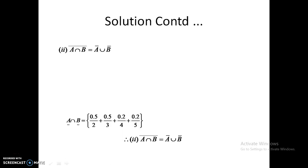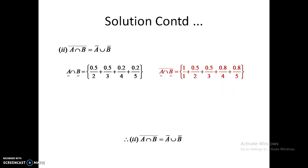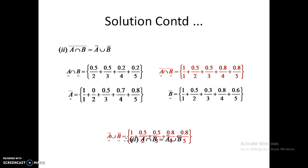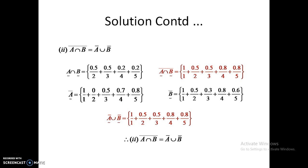For the second law: A intersection B whole bar equals A-bar union B-bar. We find A intersection B and take its complement to get one result. Then we compute A-bar union B-bar by taking the maximum of A-bar and B-bar. Comparing the red-colored answers, they are equal. Hence De Morgan's second law is also proved. This completes the first problem from fuzzy sets. Let us move on to the next problem.